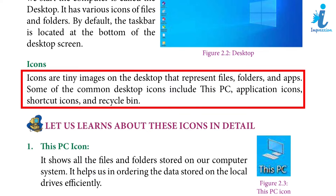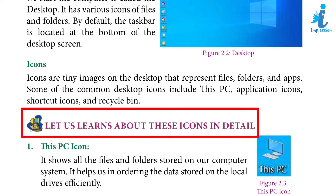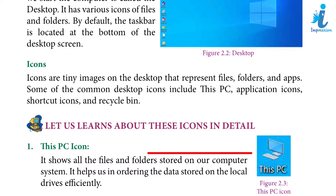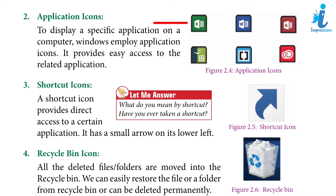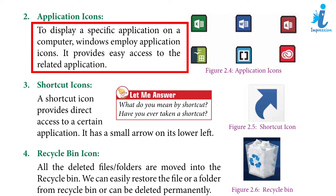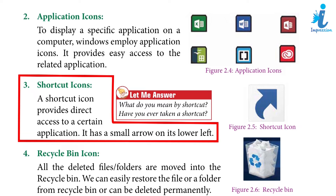Some of the common desktop icons include: This PC icon — it shows all the files and folders stored on our computer system and helps in organizing data stored on the local drives efficiently. Application icon — to display a specific application on a computer, Windows employs application icons, providing easy access to the related application. Shortcut icon — a shortcut icon provides direct access to a certain application and has a small arrow on its lower left.